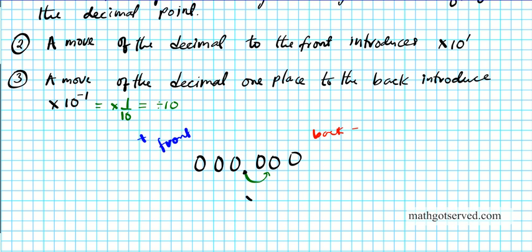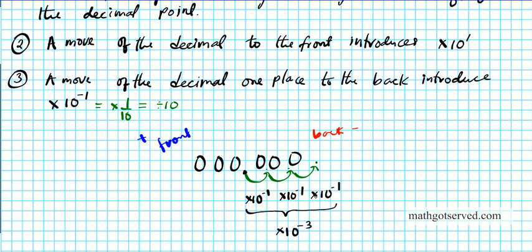So moving the decimal point three places back is equivalent to times ten to the negative three, which is the same as dividing by one thousand. I multiplied the number by one thousand, so to neutralize it I divide by one thousand — that's times ten to the negative three. When moving back, the power of ten becomes negative.